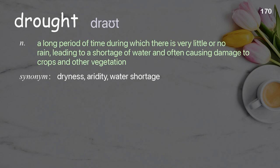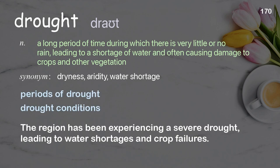Drought: a long period of time during which there is very little or no rain, leading to a shortage of water and often causing damage to crops and other vegetation. Examples: periods of drought; drought conditions. The region has been experiencing a severe drought, leading to water shortages and crop failures.